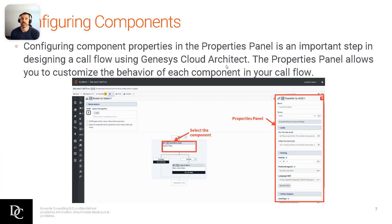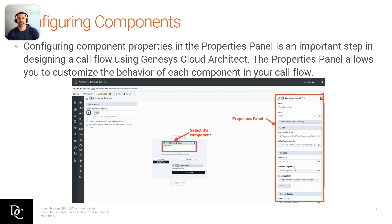Here's the screenshot from the previous slide. You're going to be configuring components in the properties panel. For example, click on the Queue Transfer to Sales component and you'll see a whole bunch of properties — pre-transfer or failed audio, the queue, you can rename it, set priority on the routing so calls get answered quicker. Preferred agents is not covered in this course — that's more of an extended course. Language skills let you set Spanish or other languages beyond the default English, and you can also add an ACD skill. There are some failure outputs not covered in this course.